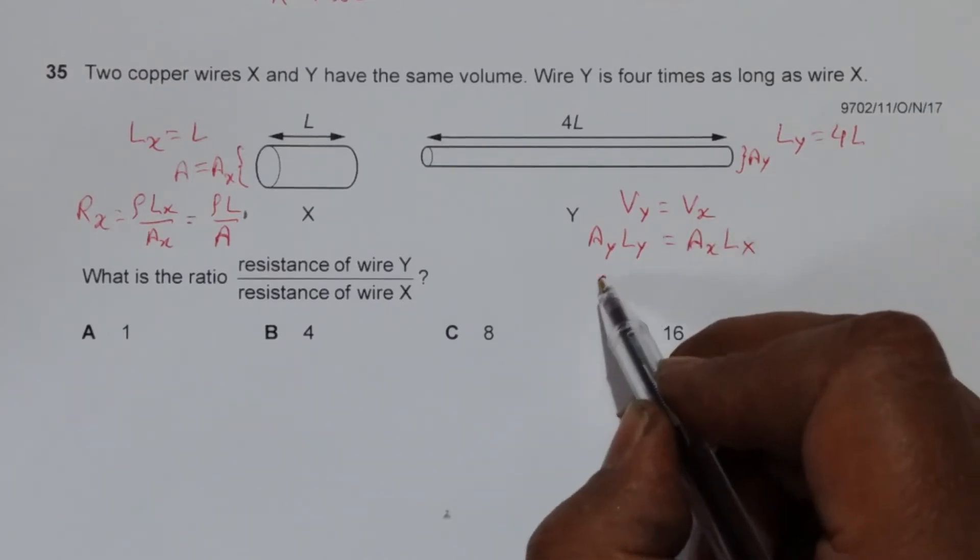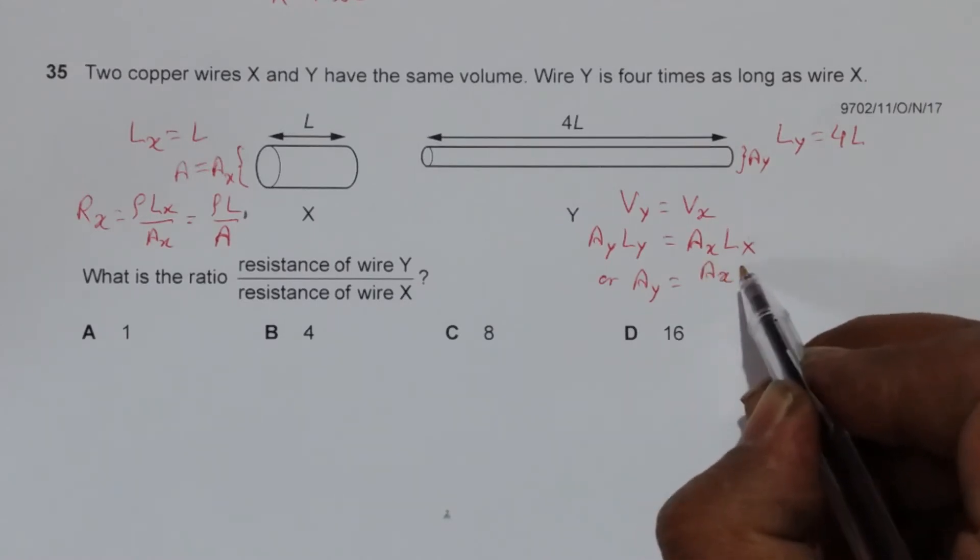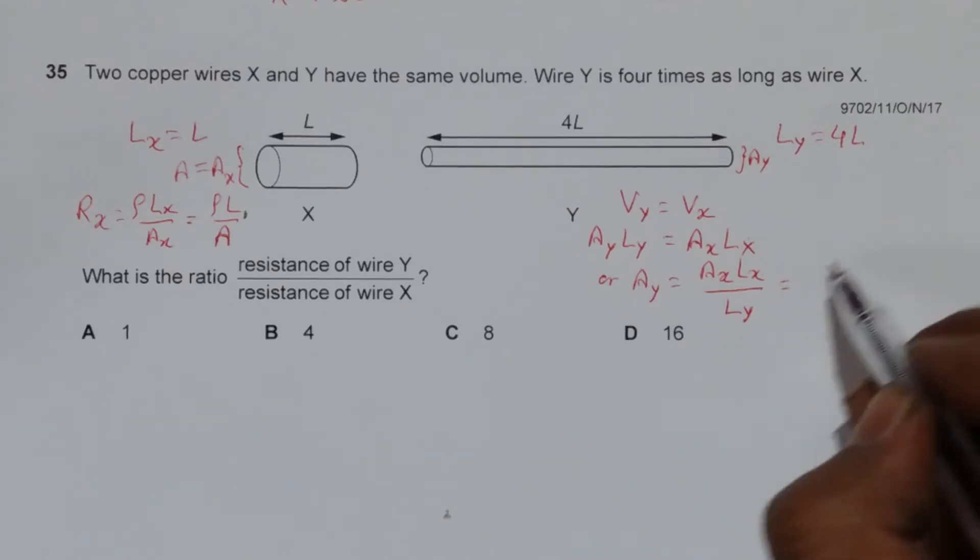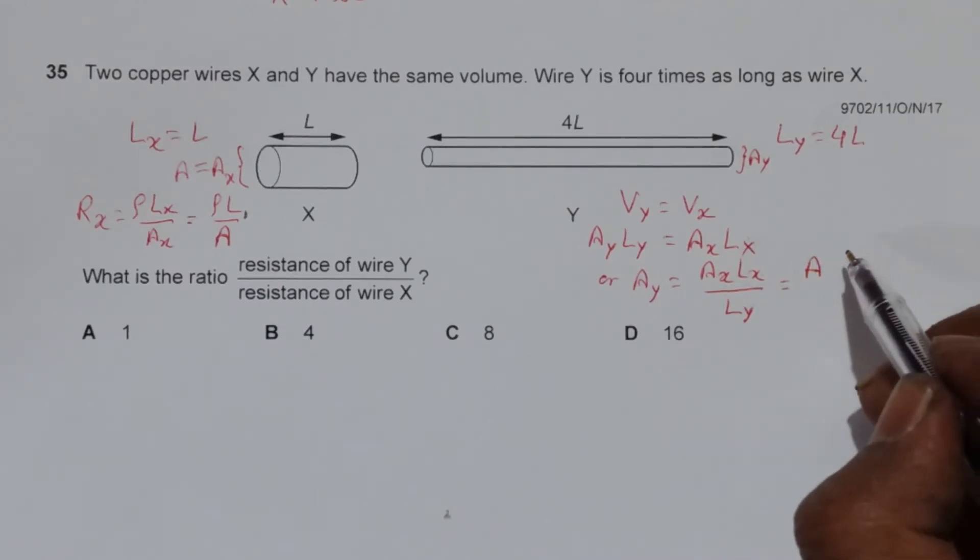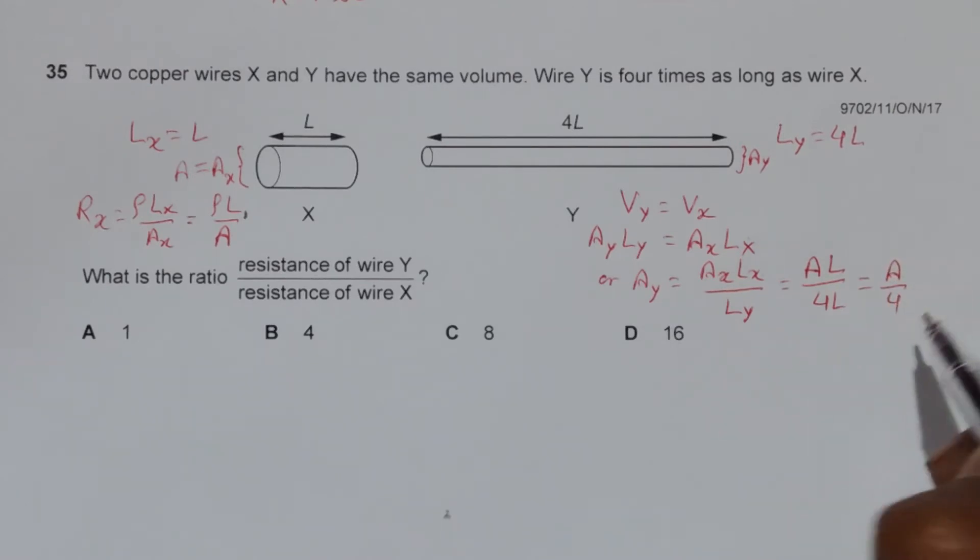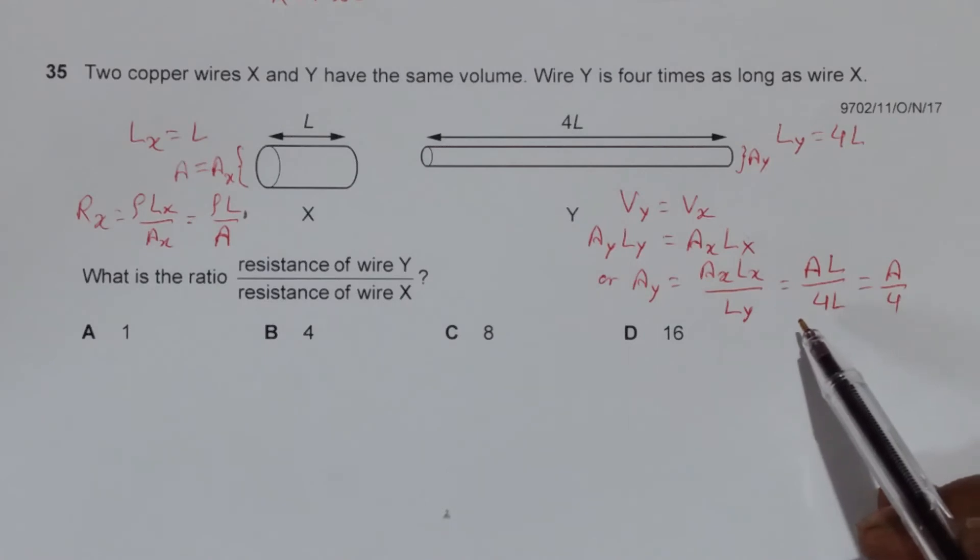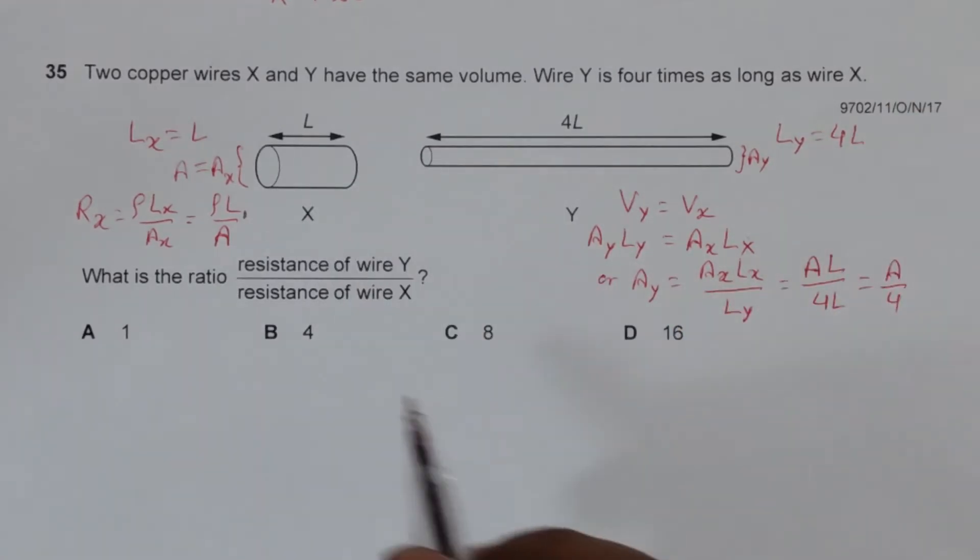This gives us A_Y equals A_X × L_X divided by L_Y, which will be equal to A × L divided by 4L, which gives us A/4. So the cross-section of Y will be four times smaller than that of X.